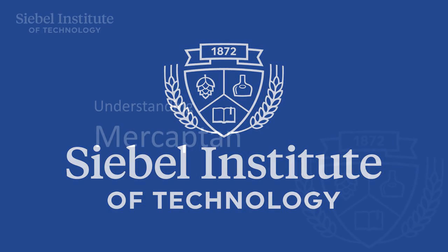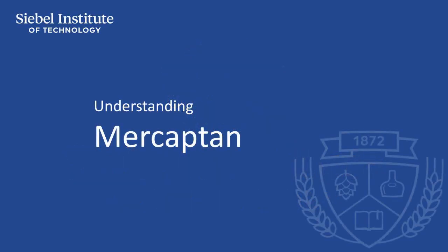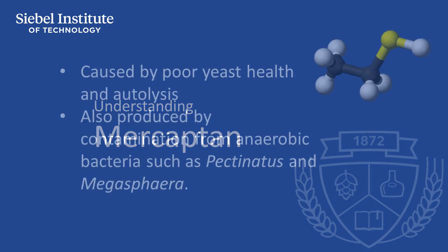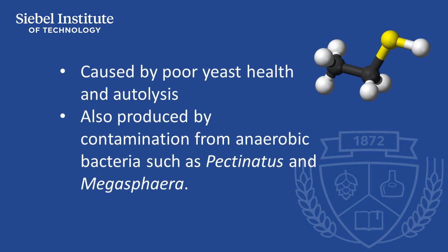Ethanethiol can arise due to poor yeast health and yeast autolysis. It's produced at low levels by certain yeast strains, but detectable levels can be due to yeast stress and death. Ethanethiol is also produced by contamination of anaerobic bacteria such as pectinatus and megasphera.